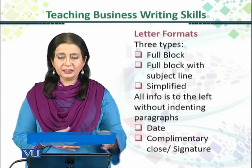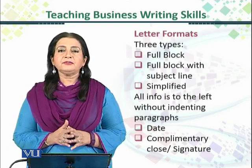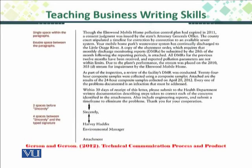You give a date with it and then you have a complimentary close and the signature, and all of this is on the left hand side of the page. This is what a full block looks like. You can see that all the information — from the writer's address, the date, the reader's address, the salutation, and the introductory paragraph — all of these are flush with the left margin of the page. There are two to four spaces in between all of these, from the top of the margin down to the space between the salutation and the first paragraph. This is what the full block looks like, and you can see the other part of the same letter follows the same rule throughout.